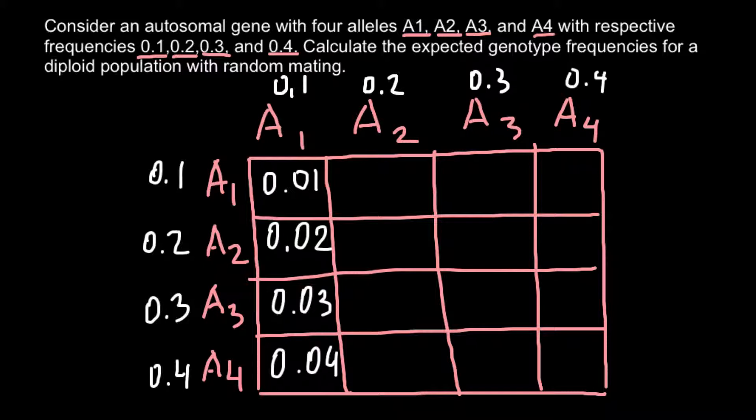We can say that instead of frequency 0.1, this is 10%, and frequency of the A3 allele is 30%, and 40% for A4.